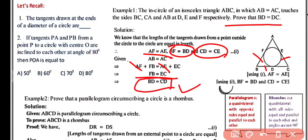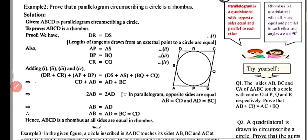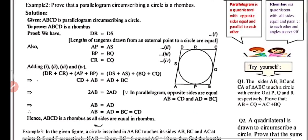So BD equals CD, which is what we were required to prove — hence proved. Now question number two: prove that a parallelogram circumscribing a circle is a rhombus. We have to prove that parallelogram ABCD, which circumscribes a circle — meaning the circle is inside touching it at four points P, Q, R, and S — is a rhombus.